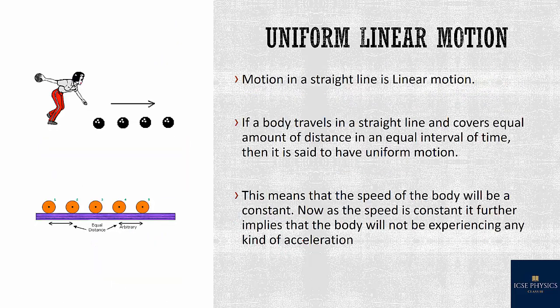Now, what is uniform linear motion and how is it different from simple linear motion? Uniform linear motion is also motion in a straight line, but if the body travels equal distance in equal intervals of time in a straight line, then it is said to be uniform motion.